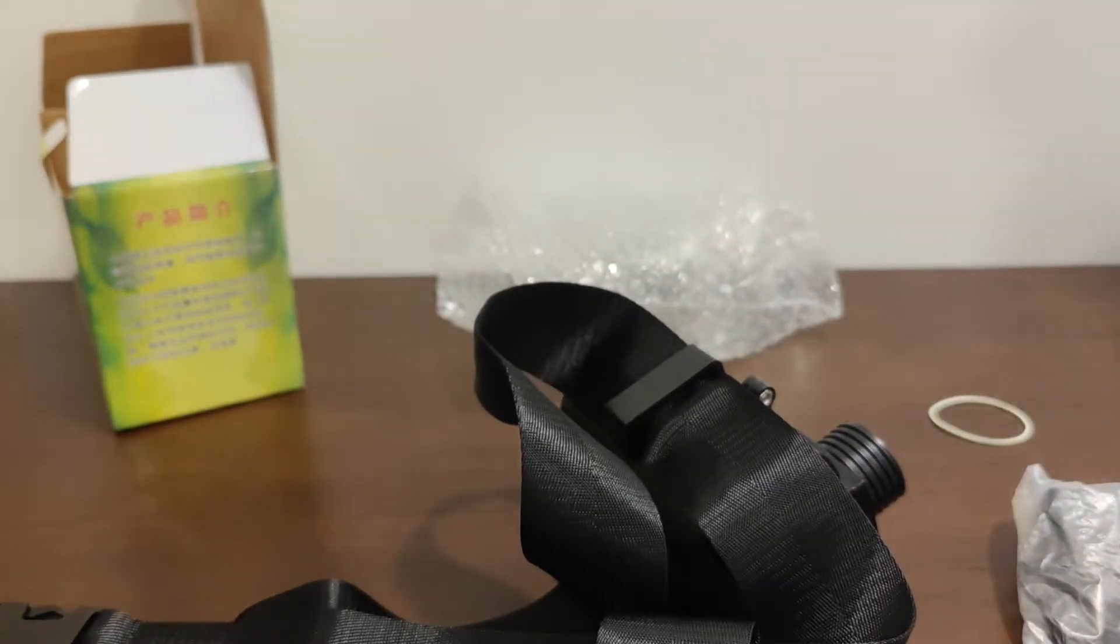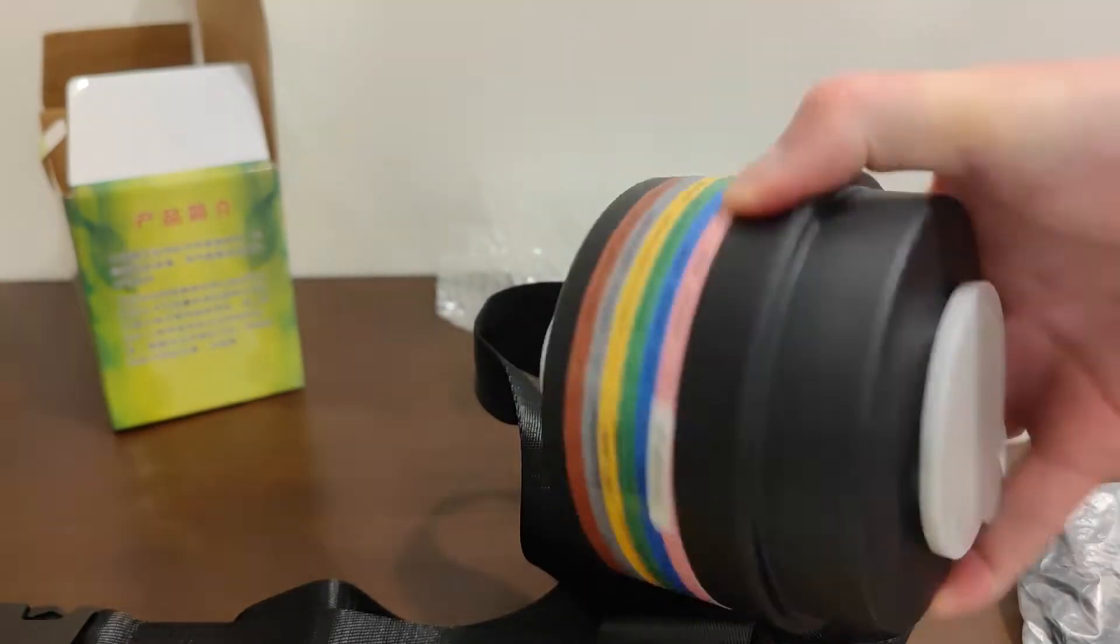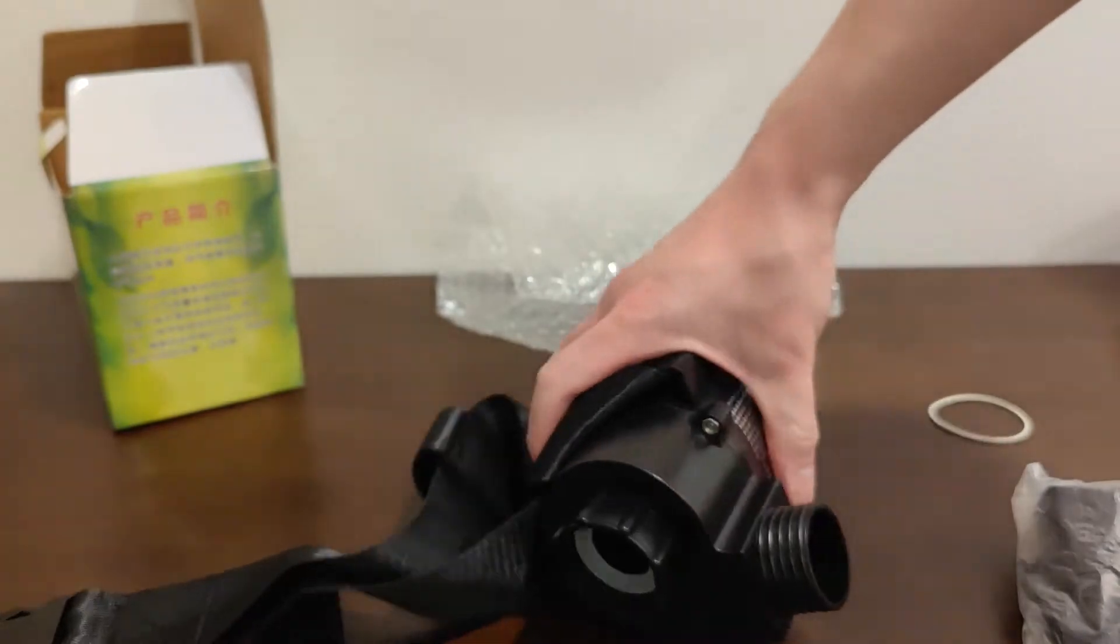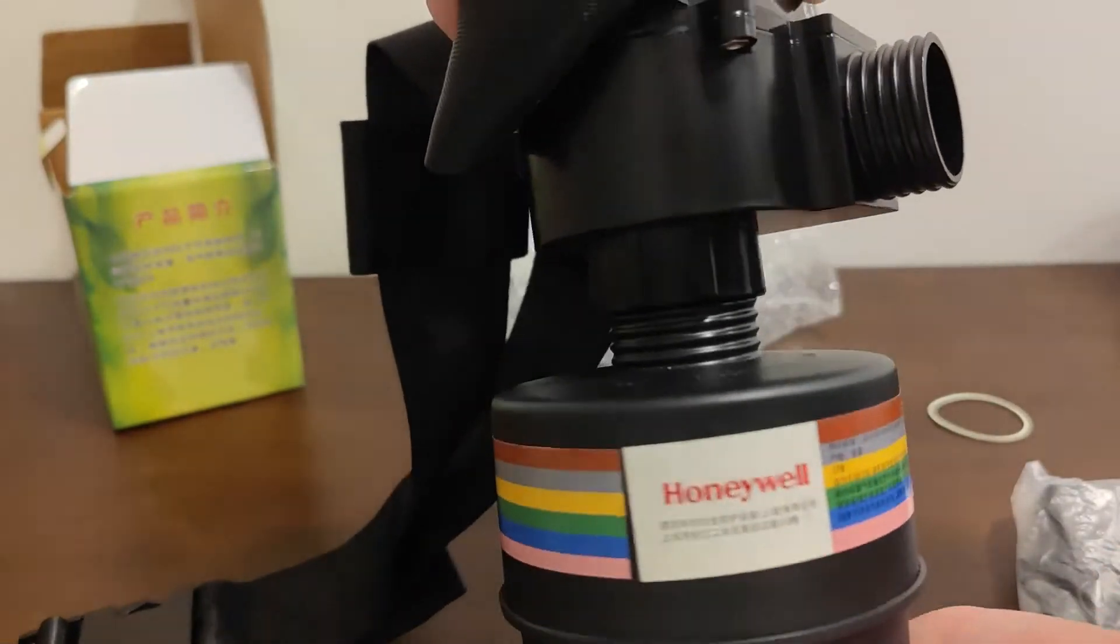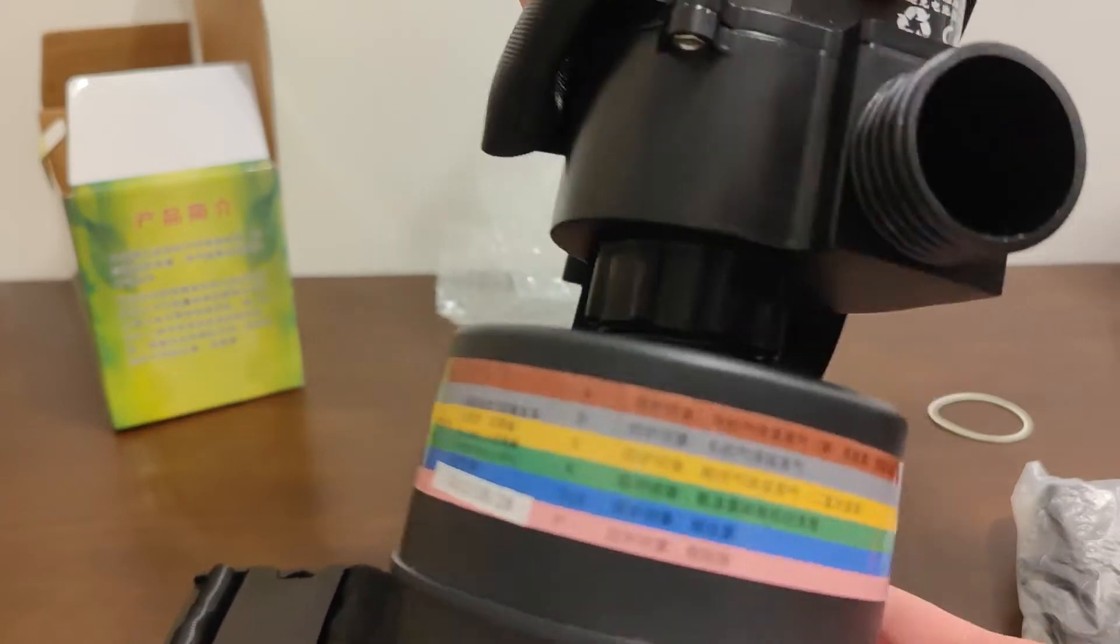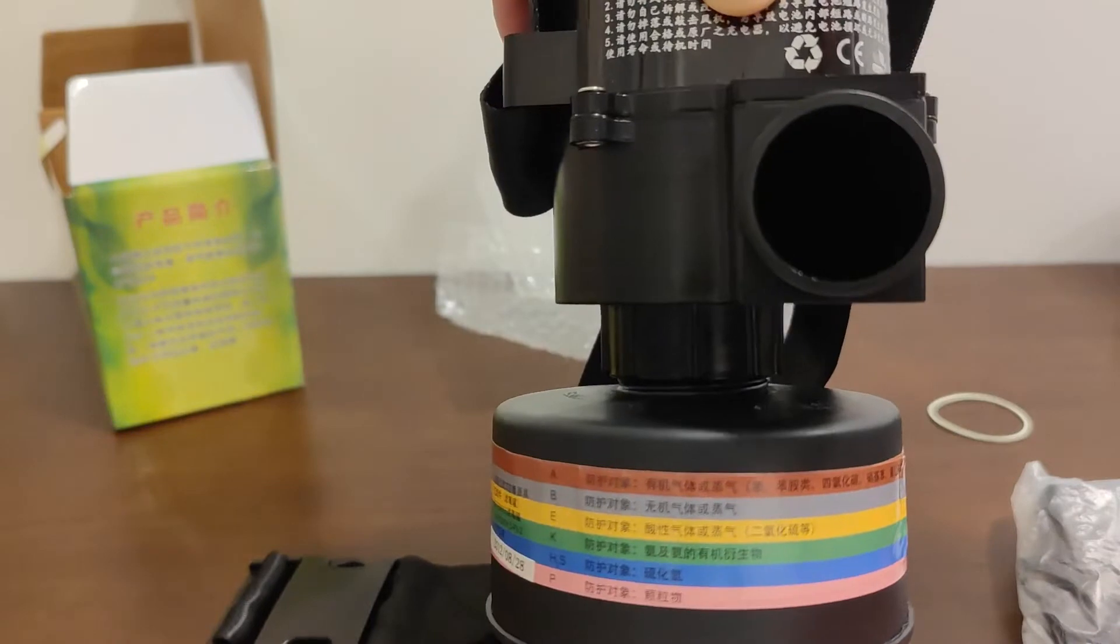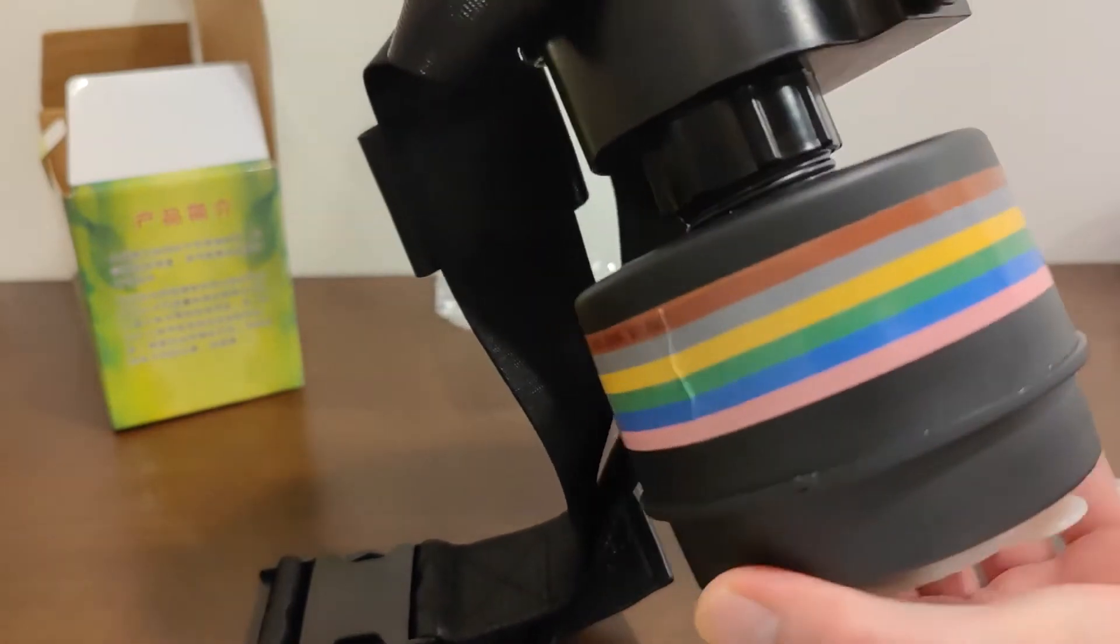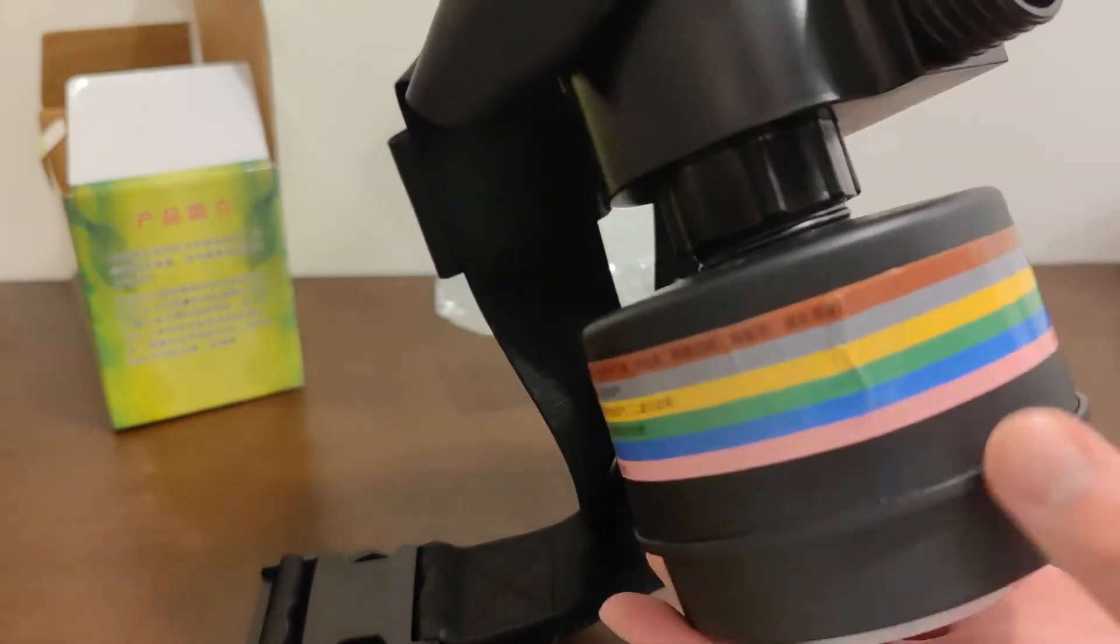Next, a Honeywell ABEK P filter - this is definitely RD40 NATO. There's a thread as well, but it looks like it's going in without resistance. That goes in without resistance at all and this is a bonafide RD40 times one over seven NATO filter. It screws in without resistance and engages the o-ring pretty well.